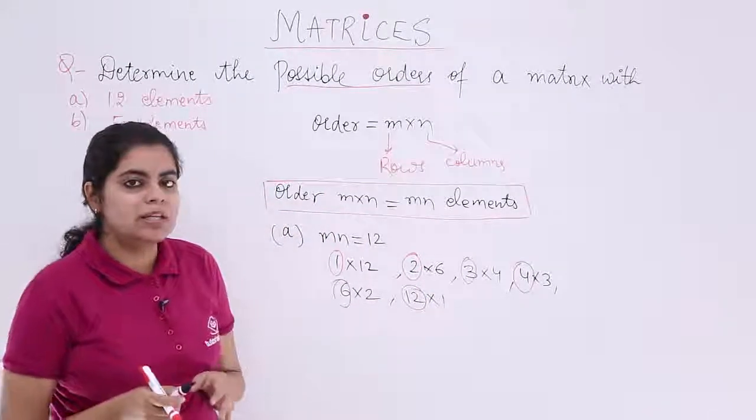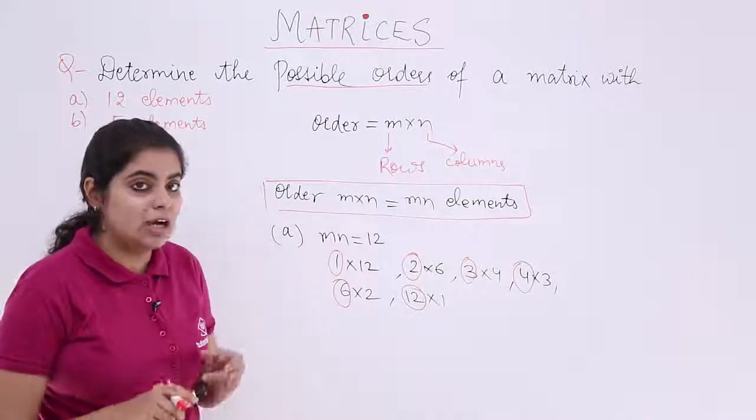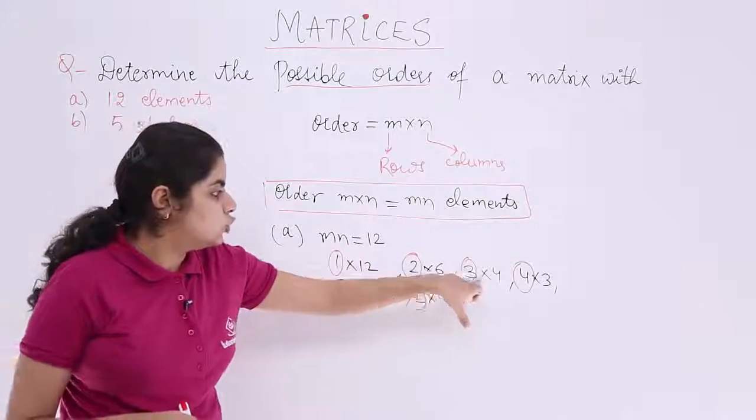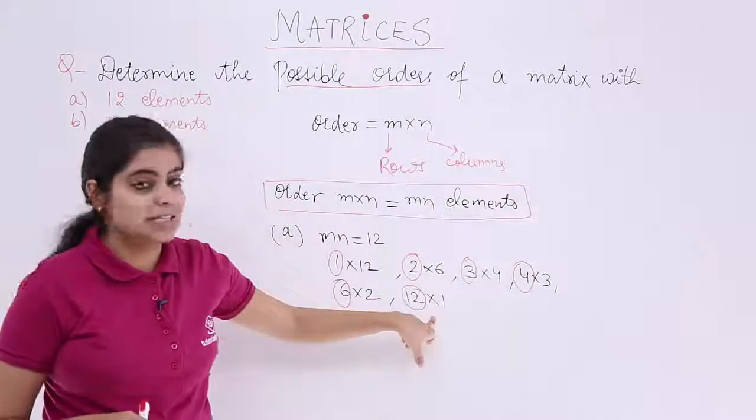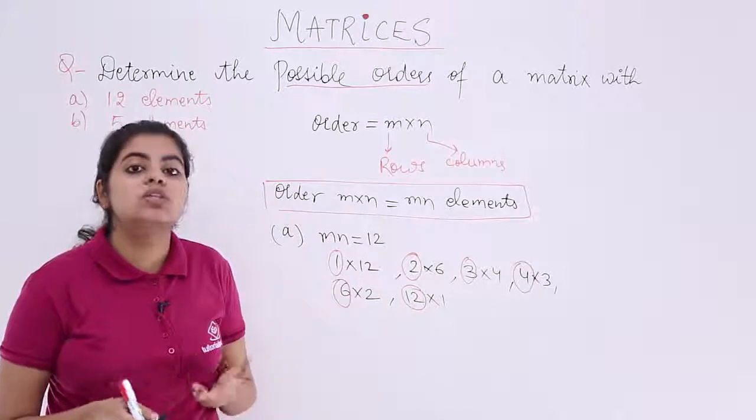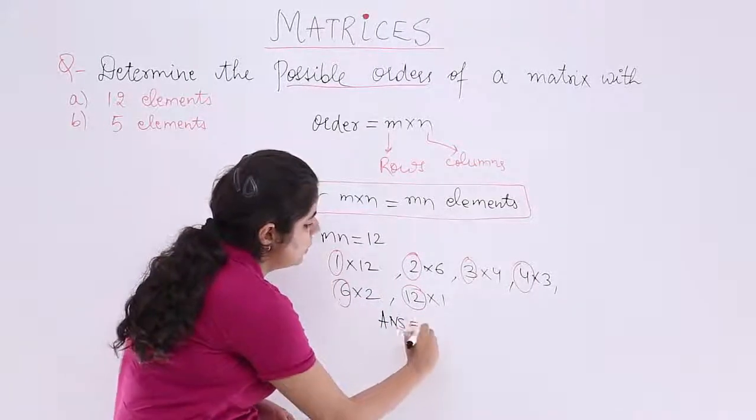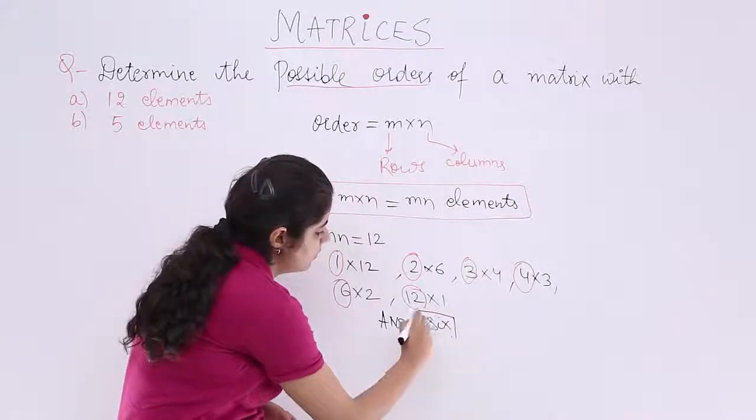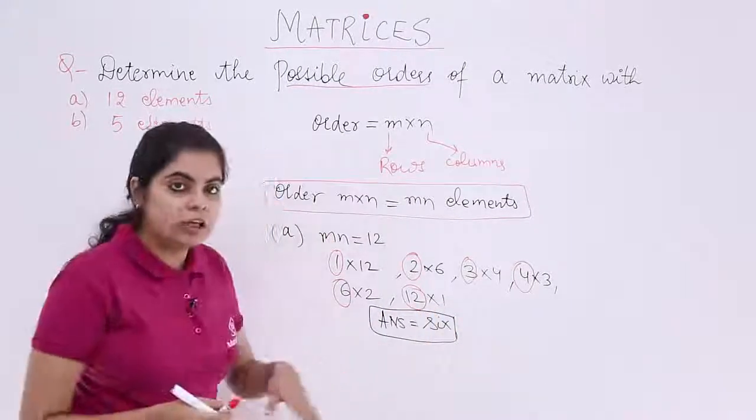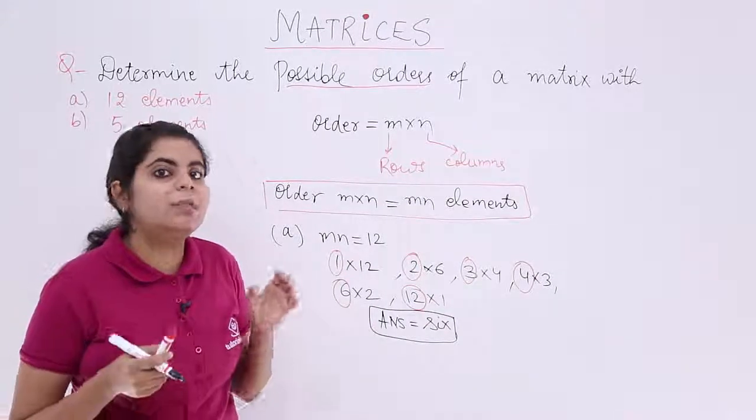So that means what are the number of possible orders? They are namely 1, 2, 3, 4, 5, 6. Six possible orders for a matrix with 12 elements. So the answer is 6 possible orders. Numerically you have found out that 6 possible orders exist.